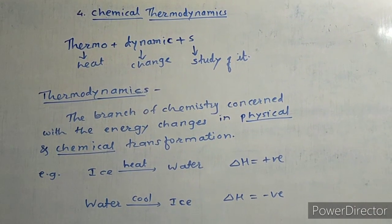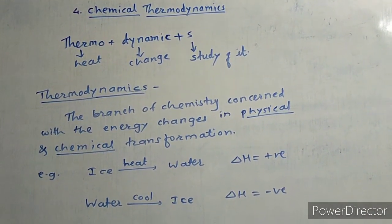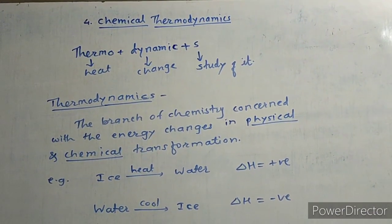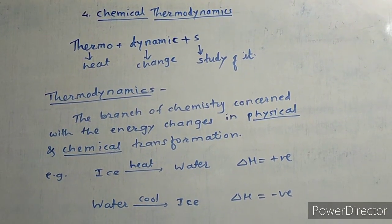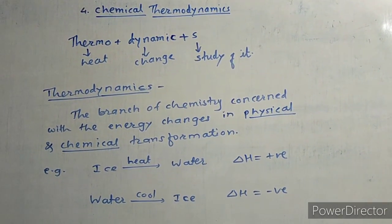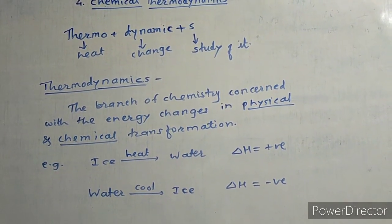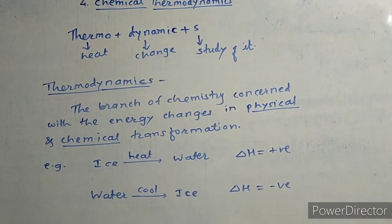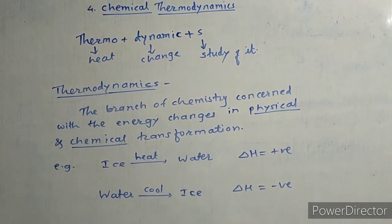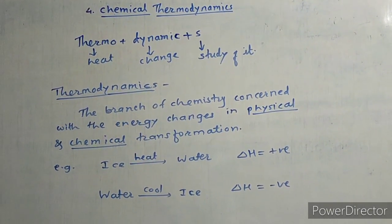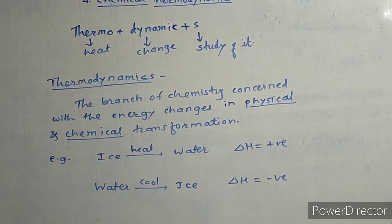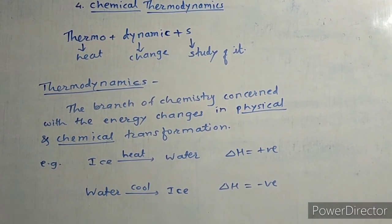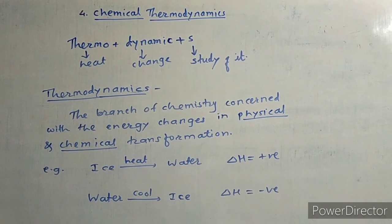Hello students, we are going to talk about chemistry chapter 4: Chemical Thermodynamics. Before we study thermodynamics, let's see the meaning. Thermo means heat, dynamic means change, and S means study of it. Thermodynamics is the branch of chemistry concerned with the energy changes in physical and chemical transformation.